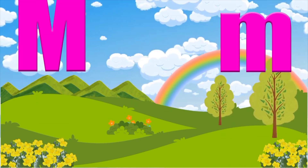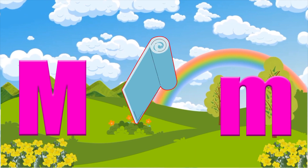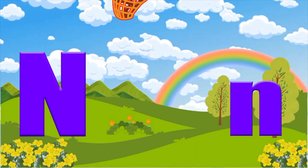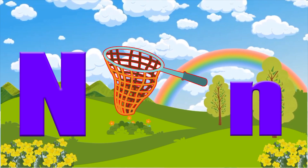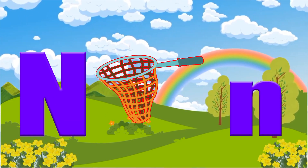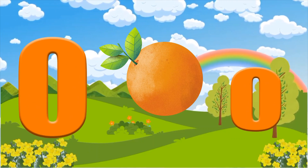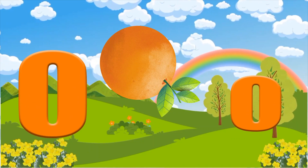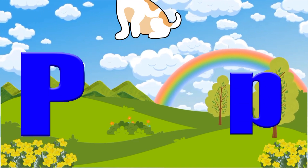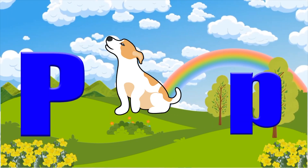M is for mat, m-m-mat. N is for net, n-n-net. O is for orange, o-o-orange. P is for pet, p-p-pet.